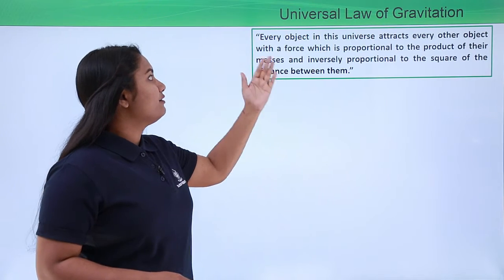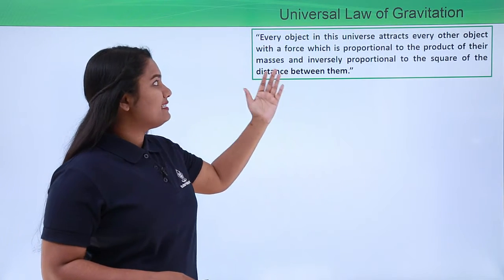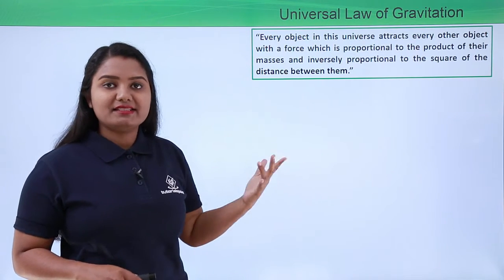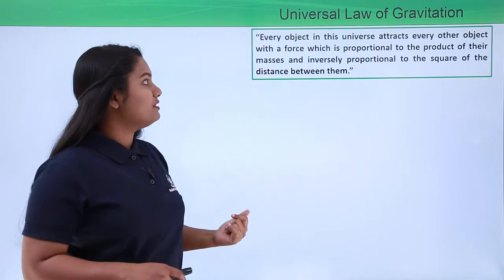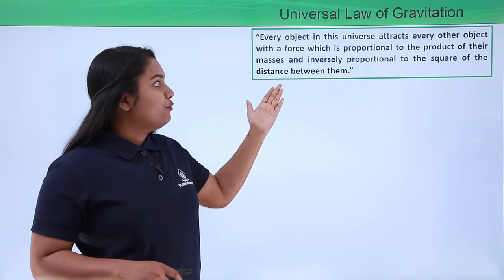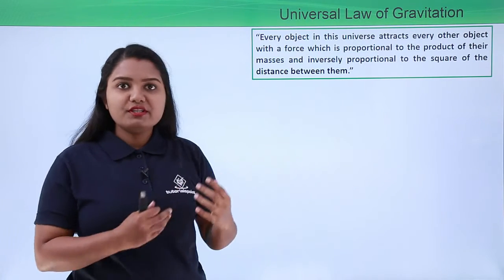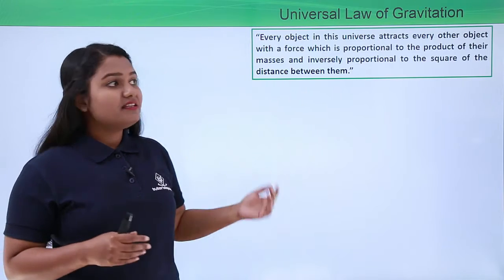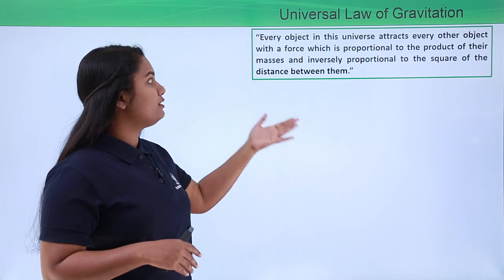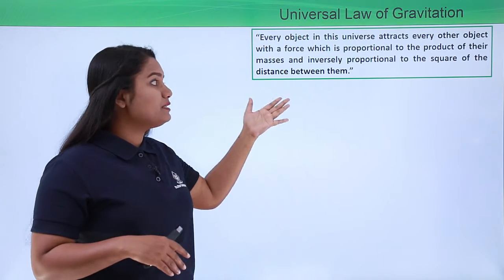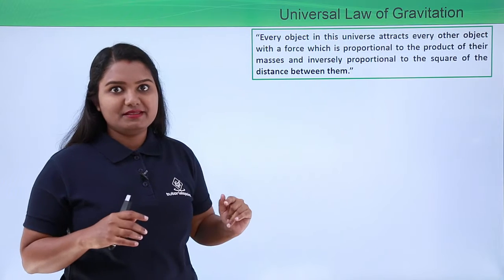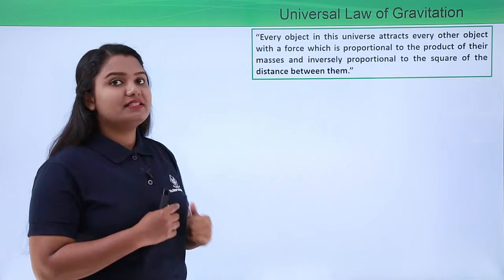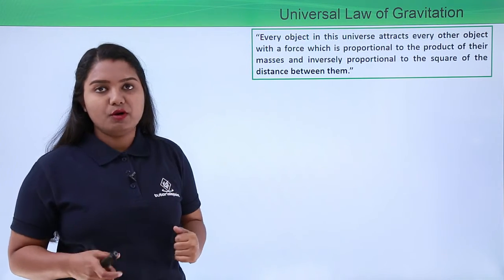This law of gravitation states that every object in this universe attracts every other object with a force which is proportional to the product of their masses and is inversely proportional to the square of the distance between these two objects.